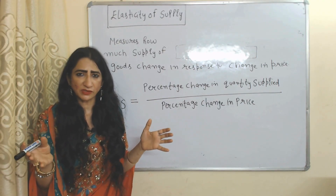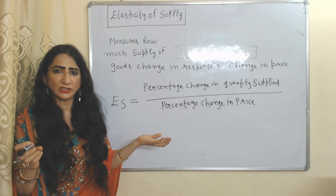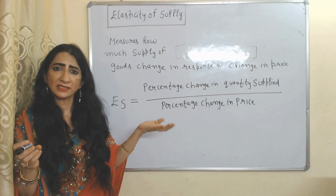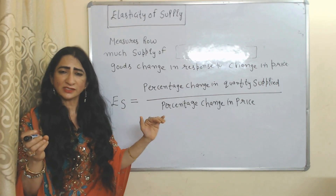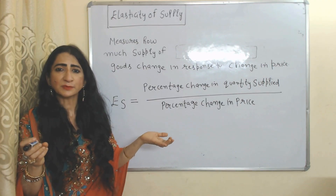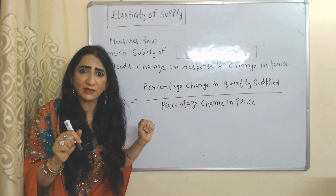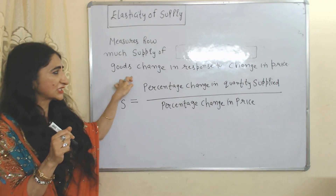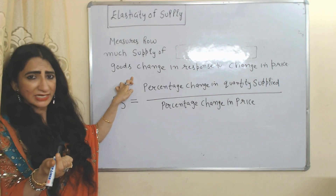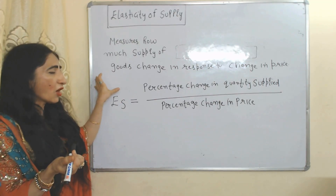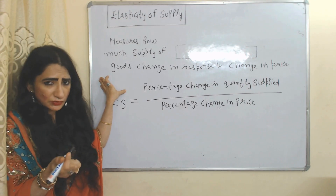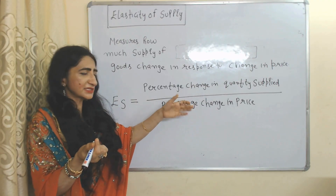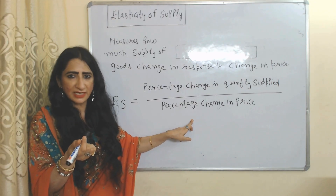Now we are going to talk about elasticity of supply. The law of supply tells us that as price increases supply also increases and as price falls supply also falls, but it doesn't explain how much supply increases or decreases due to a change in price. Elasticity of supply measures how much the supply of goods changes in response to a change in price. The formula is: percentage change in quantity supplied divided by percentage change in price.